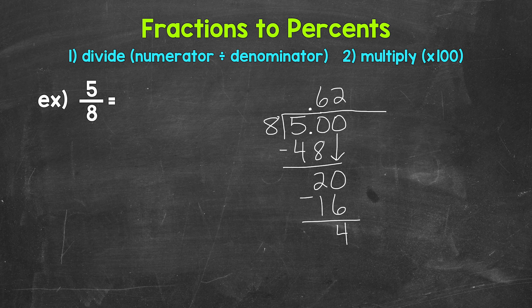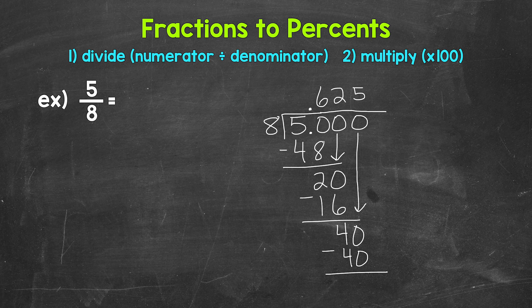We still don't have that clean cut zero at the bottom, so let's use another zero that we can bring down. Now we have 40. 40 divided by 8, which is 5. So we put 5 up here. Multiply: 5 times 8 is 40. Subtract: 40 minus 40 is zero. Now we have that clean cut zero at the bottom and nothing else to bring down, so we are done. 5 eighths equals 0.625.